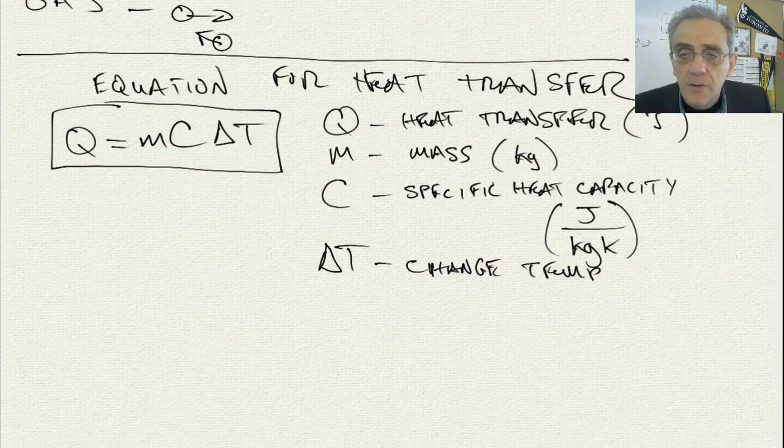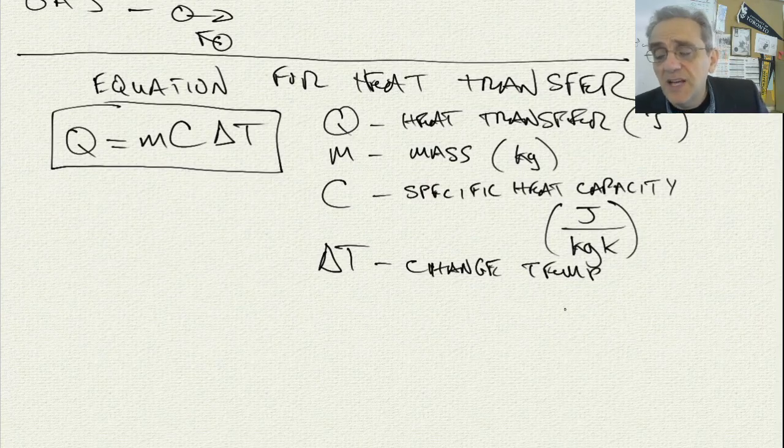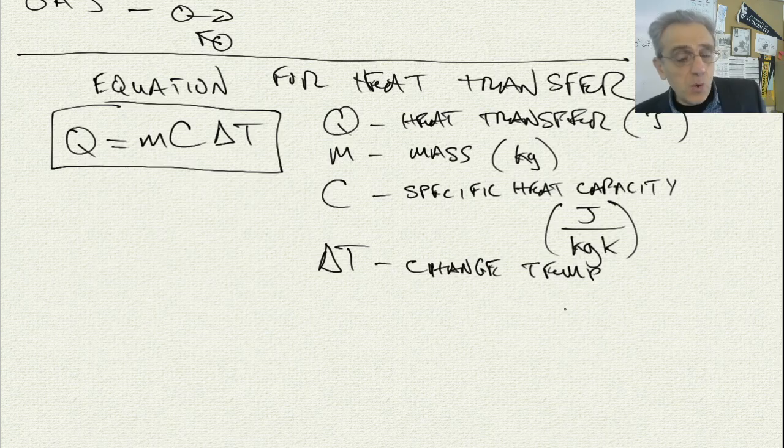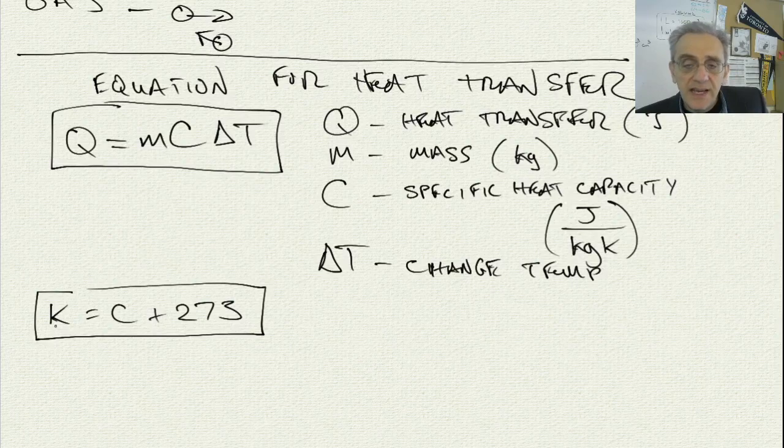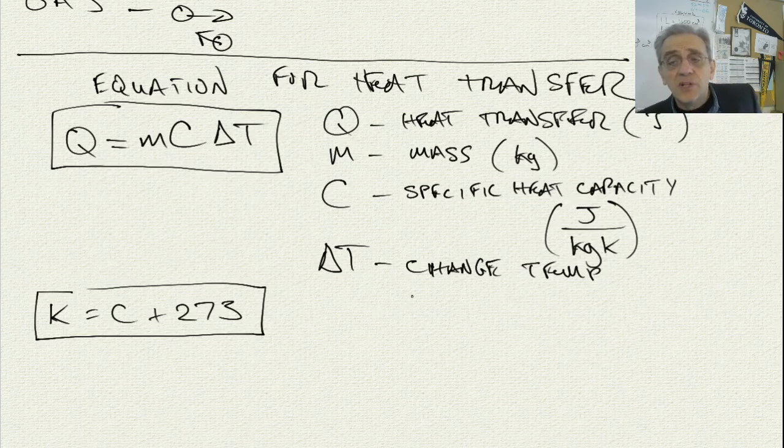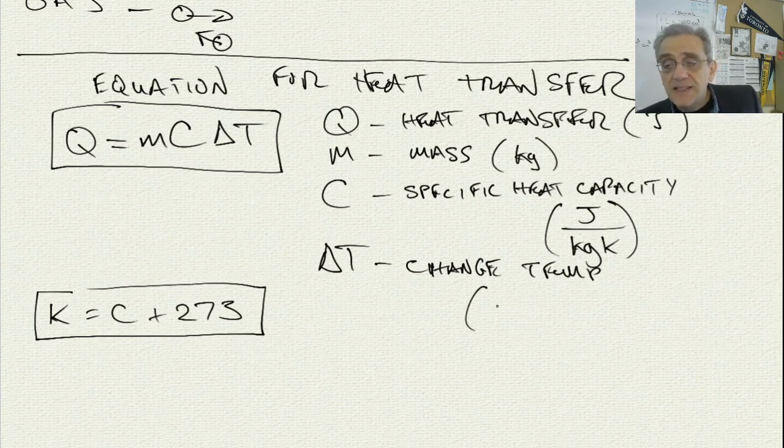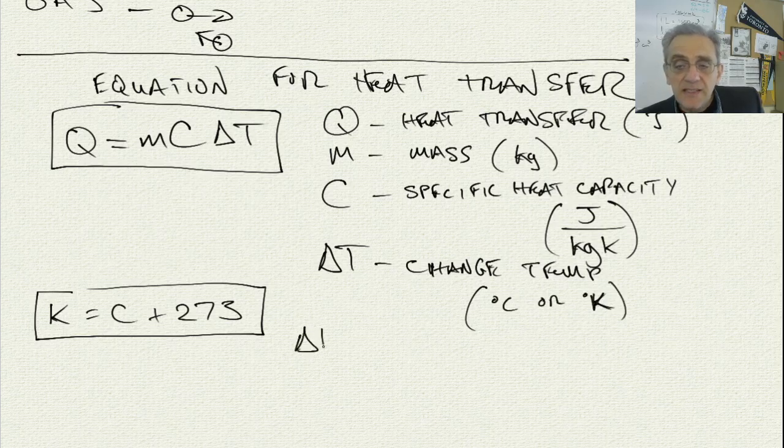Now change in temperature. Remember, even though this is joules per kilogram Kelvin, the equation for relating Kelvin and Celsius is that Kelvin is equal to Celsius plus 273. Now you might ask, well, do we have to change everything into Kelvin before we do delta T? And the answer is no. The units for this, because it's a delta, can be either Celsius or Kelvin. Either will work.